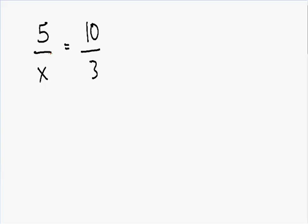So here we have the proportion example: 5 over x is equal to 10 over 3. Notice how we have a missing value of x, so we need to solve this proportion for x. A common way of solving proportions is cross multiplying, so that's what we're going to do.